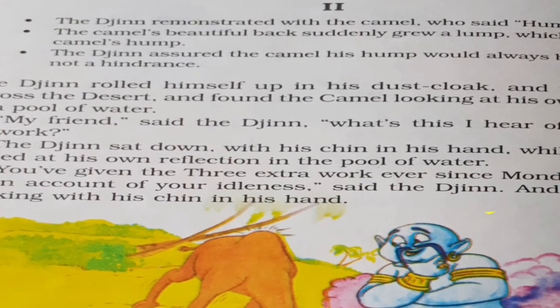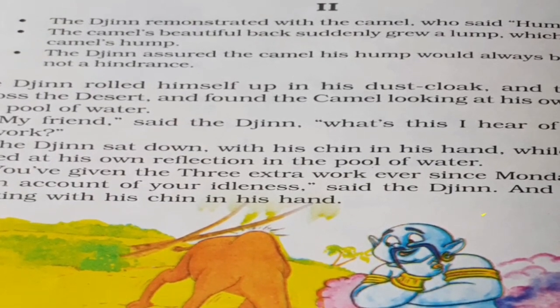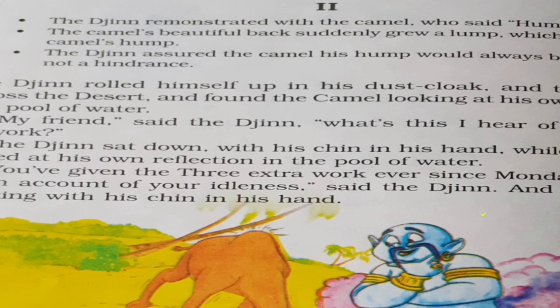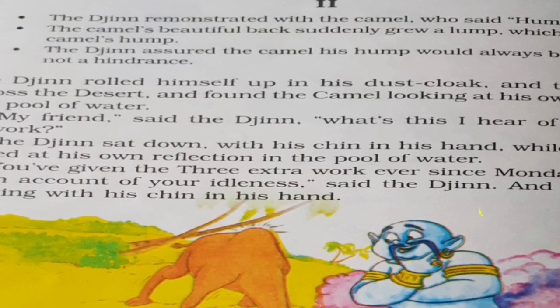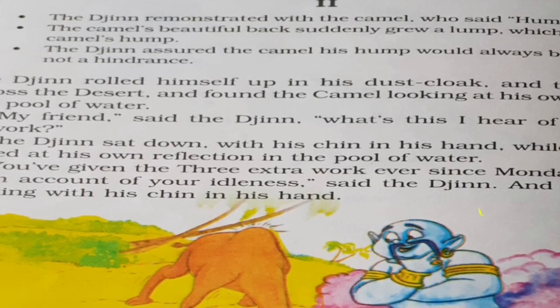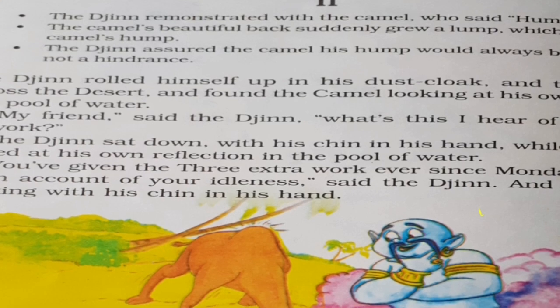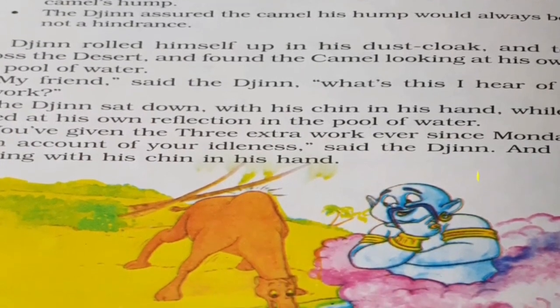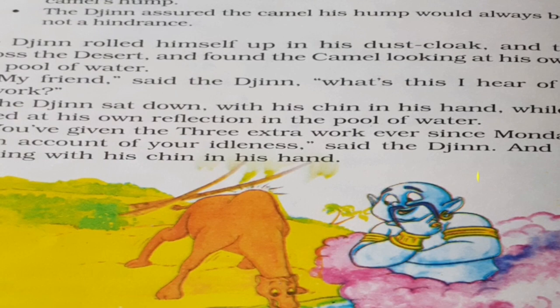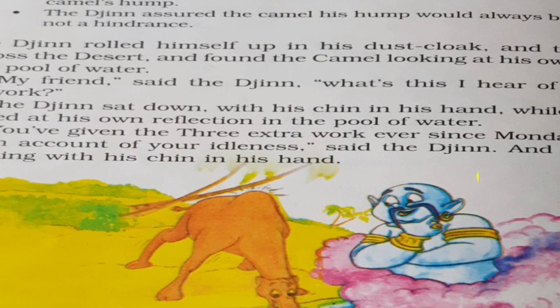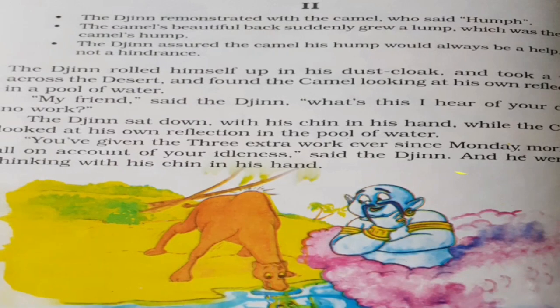The first paragraph says: when Jin listened to all the complaints from the other animals — the ox, dog, and horse — because they were doing the work while the camel was sitting very calmly, eating all day and taking rest. This was not tolerated by them, so they went and complained. Jin listened to all the complaints and assured them he would solve it. Then Jin went to the camel, who was looking at his own reflection in the pool of water.